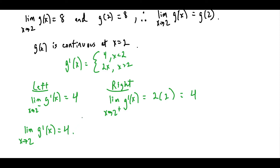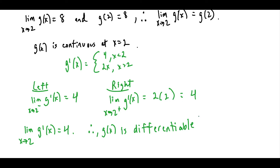Since we already showed it's continuous, we can now say: therefore g(x) is differentiable at x equals two. One thing to be careful about — if you had rushed ahead to this step without checking continuity first, you could definitely run into trouble. Always take the time to check continuity first.